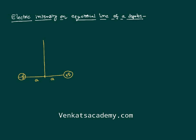The equatorial line is a line passing through the centre of the dipole and perpendicular to the axial line. Now I want to calculate electric field intensity on the equatorial line. Let us consider a point B which is at a distance r, and assume that r is much bigger than a as an approximation. The intensity is the force experienced by a unit positive charge.